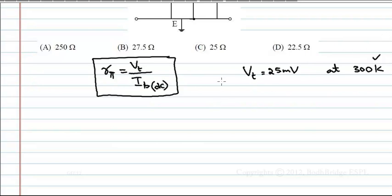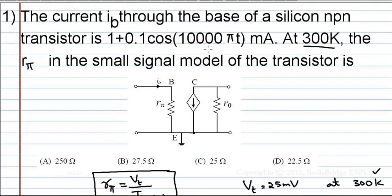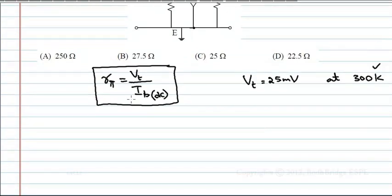And IB DC means the DC component of IB. The DC component of IB has frequency zero. That is only 1. The constant term has frequency zero. That is the DC component, which is 1.